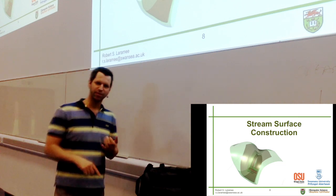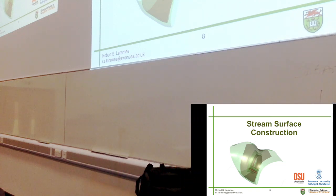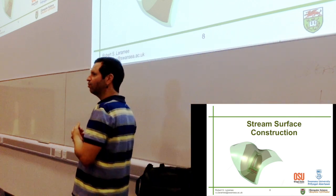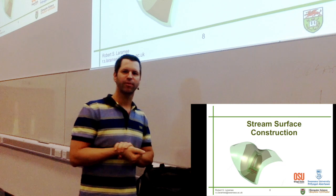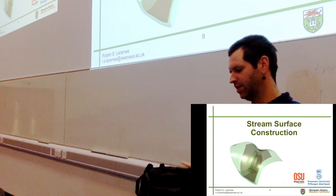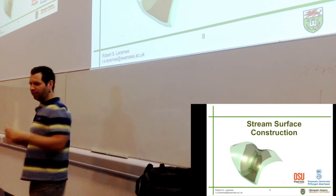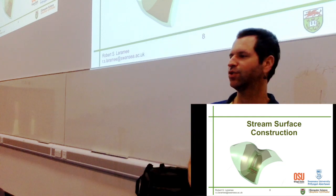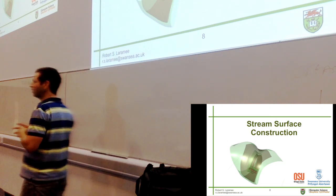That includes streamlines, pathlines, streaklines, stream ribbons, stream surfaces, and stream tubes — all those things we mentioned so far. The other category we talked about was direct flow visualization, using glyphs and color mapping briefly. After we look at the geometric flow techniques, the next topic we'll look at is texture-based flow visualization. But right now we're in the middle of the geometric flow visualization theme.